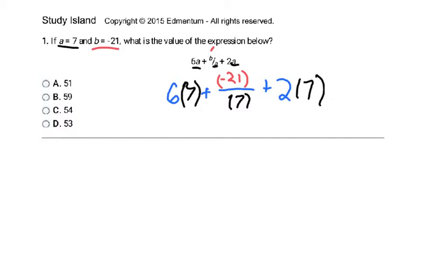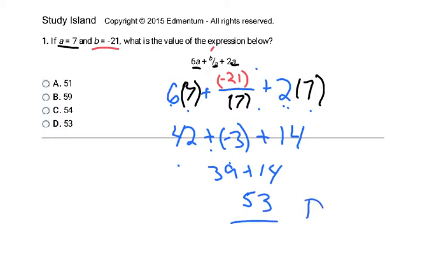Okay, so I have 6 times 7, which is 42, plus, and then I have negative 21 divided by 7, that's going to be negative 3, and since it's negative, I'm going to put it in parentheses so that I can keep my sign straight, plus 2 times 7, which is 14. And then I add and subtract left to right. So here, 42 plus negative 3, that's going to be 39, and then 39 plus 14 is going to be 53, which is your final answer and letter D.